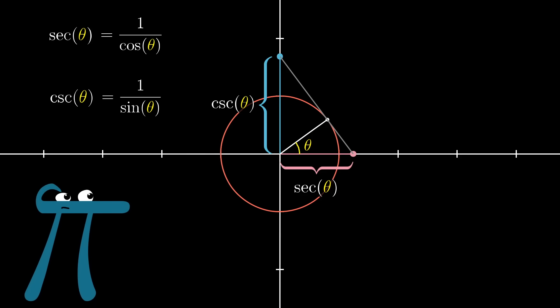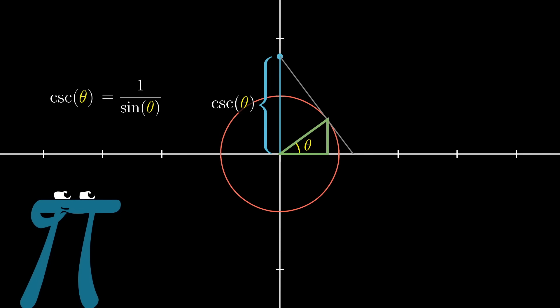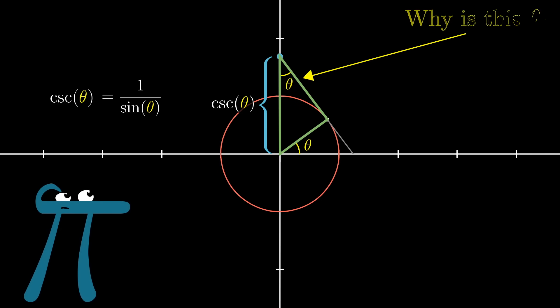If you're wondering why on earth that's true, notice that we have two similar right triangles here. One small one inside the circle, and this larger triangle, whose hypotenuse is resting on the y-axis. I'll leave it to you to check that that interior angle up at the tip there is theta, the angle that we originally started with over inside the circle.